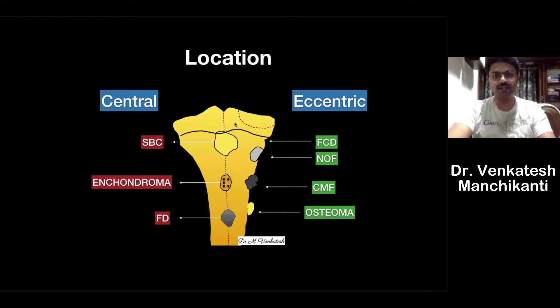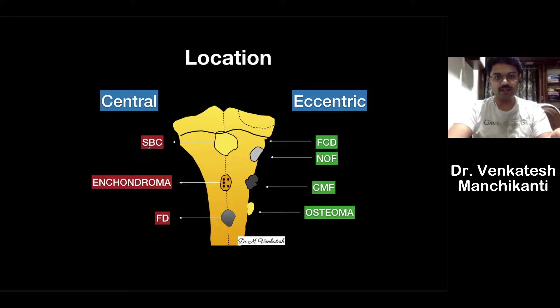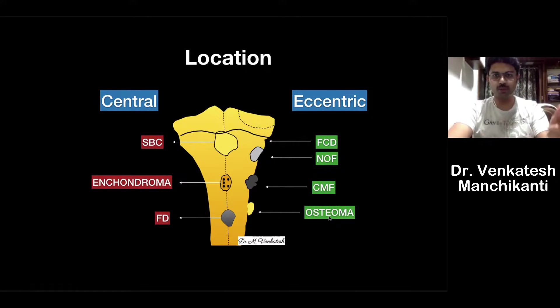Why is location within the longitudinal bone important? Centrally located lesions commonly include simple bone cyst (unicameral bone cyst), enchondroma, and fibrous dysplasia — 99% of the time these are centrally located. Eccentrically located lesions include giant cell tumor, non-ossifying fibroma, chondromyxoid fibroma, and osteoma. That is the importance of determining lesion location in a longitudinal bone.